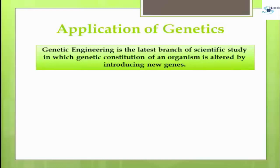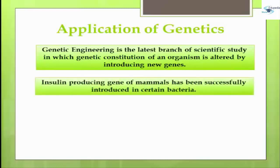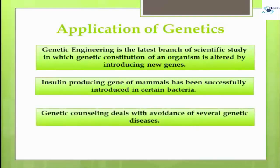The insulin-producing gene of mammals has been successfully introduced into certain bacteria, which have been made to produce it. Genetic counseling is yet another practical aspect. Newly married couples are advised to consult a specialist regarding the possibility of any undesirable trait which their children might inherit.